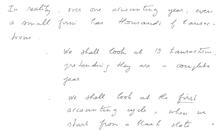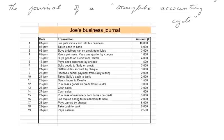In reality, over one accounting year, even a small firm has thousands of transactions. But we shall look at only 19 transactions, pretending they are a complete year. We shall look at the first accounting cycle, starting from a blank slate. This lesson is not an illustration of realistic good management, but an illustration of the whole accounting process.